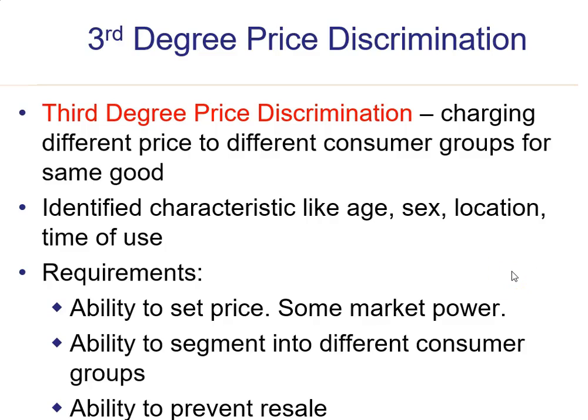Let's talk about the requirements needed to practice third-degree price discrimination. First, ability to set the price — companies have to have market power, the ability to influence and set the price. Second, the ability to segment or group people into different consumer groups — you have to be able to identify what the groups are and separate them into those segments.